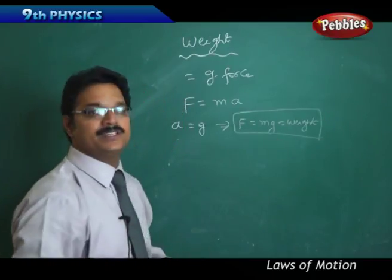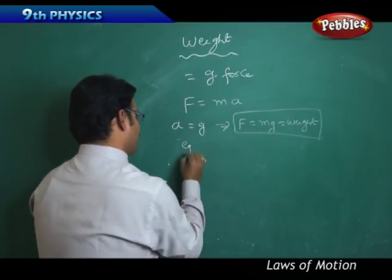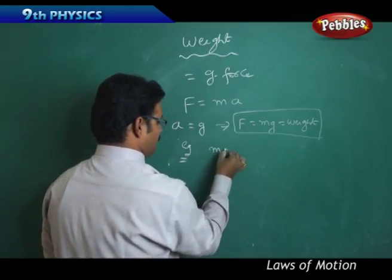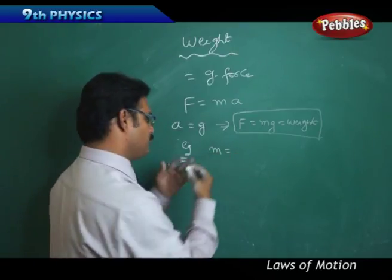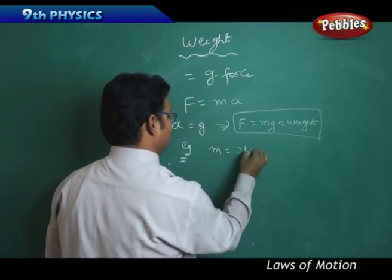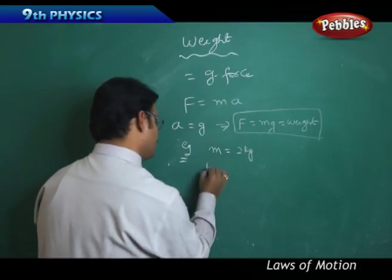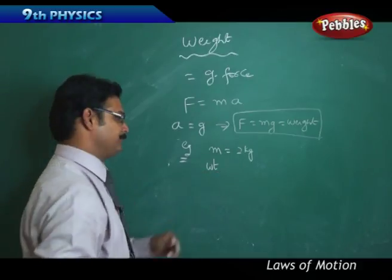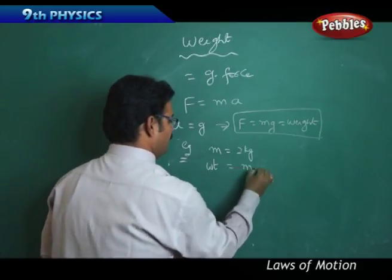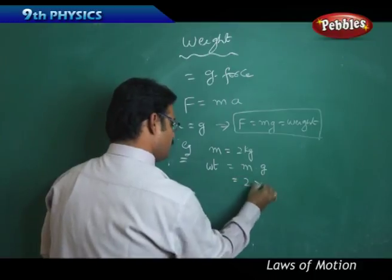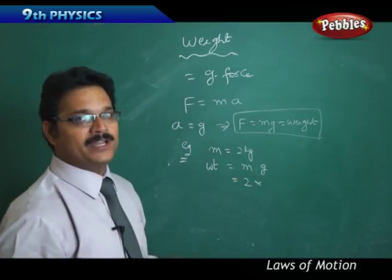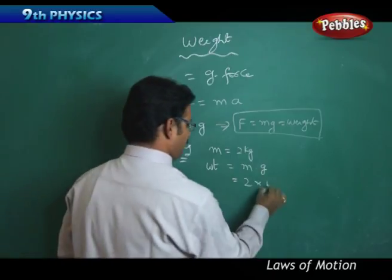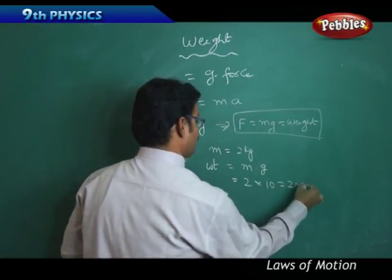For example, suppose there is a ball whose mass is 2 kg. Then what is its weight? Weight is nothing but m into g, so 2 into g. Taking g value as 10, it is nothing but 20 Newton.